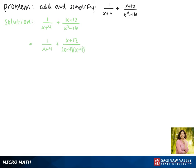Now we see that the first term needs a factor of x minus 4, so we're going to multiply by that on the top and bottom.